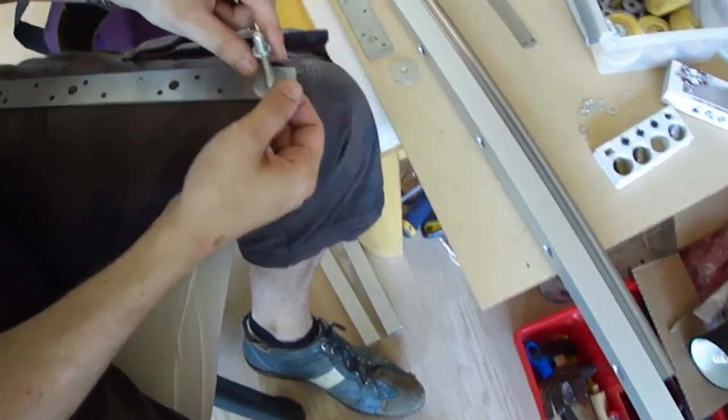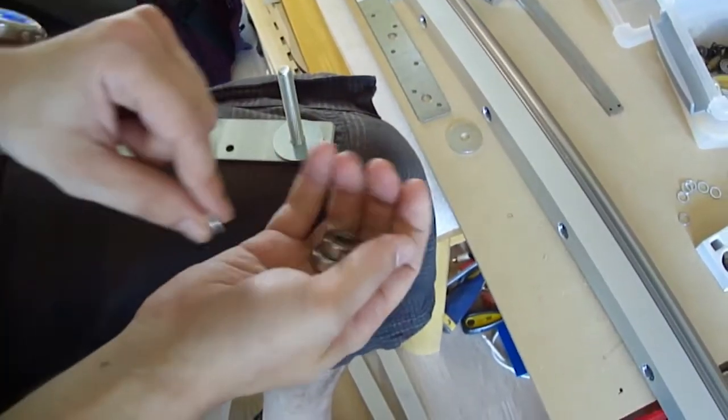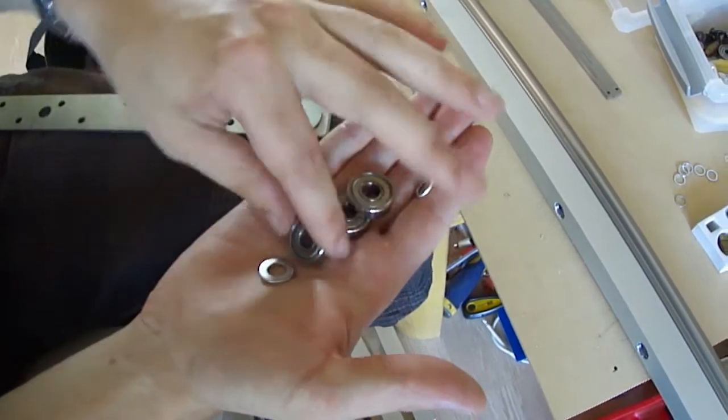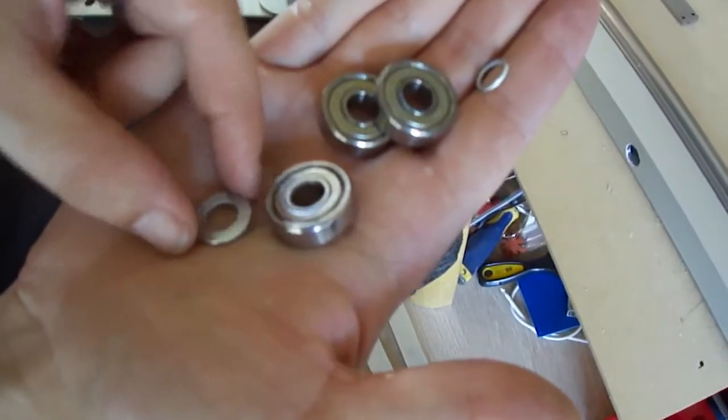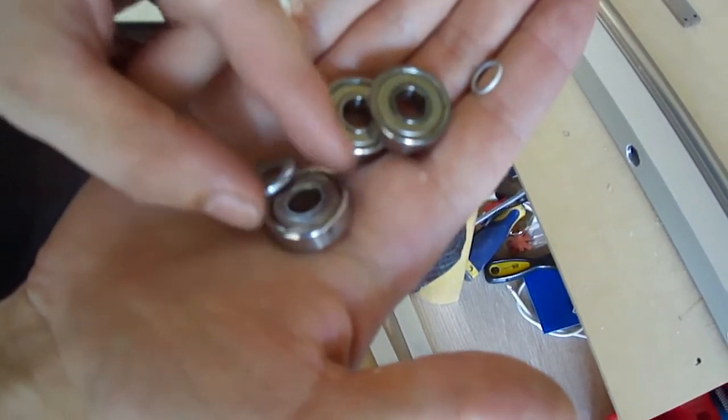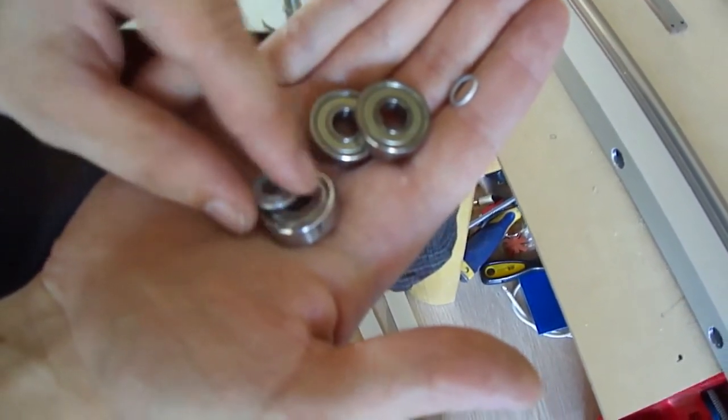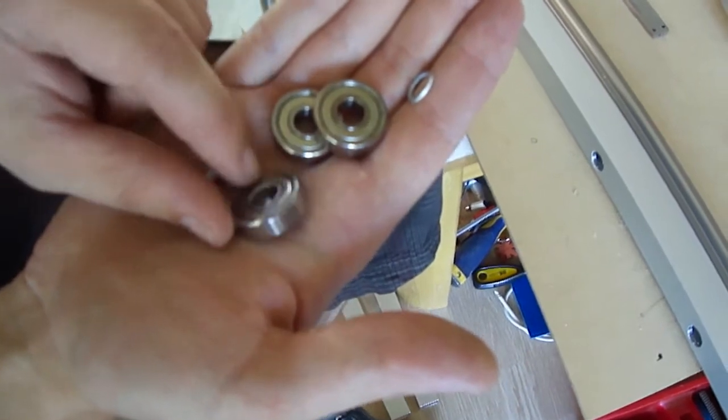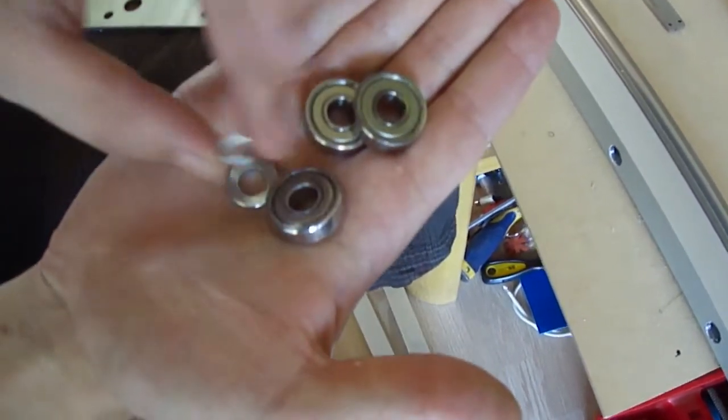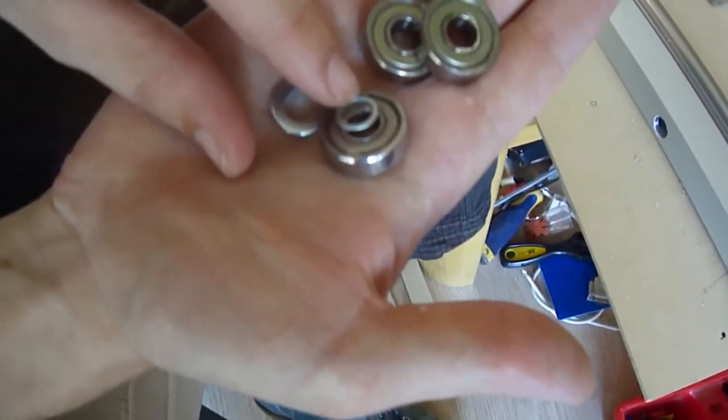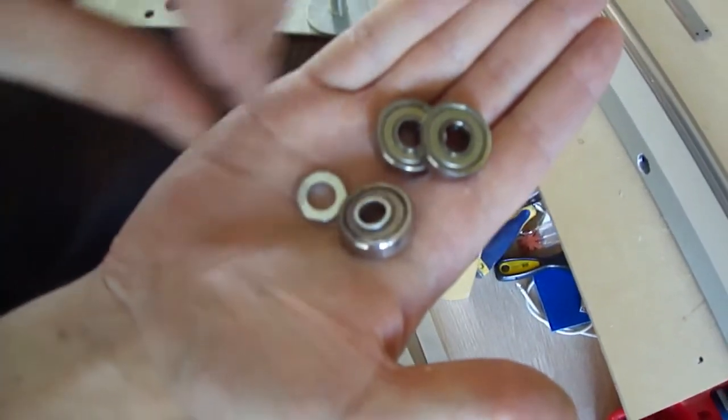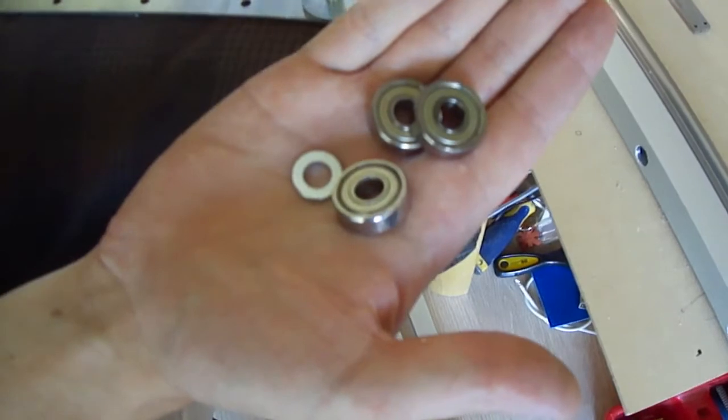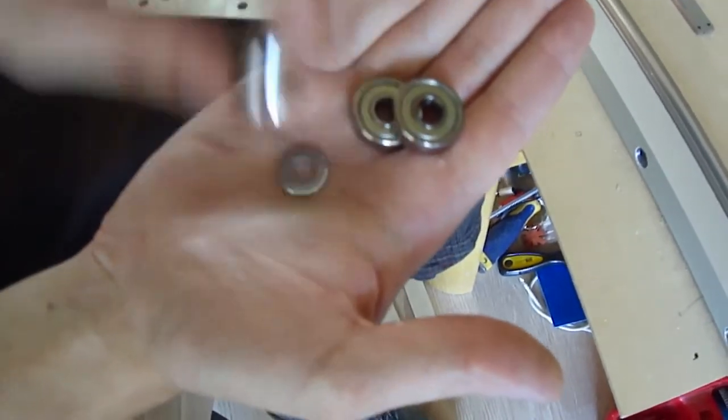This washer is probably slightly too big, because this washer will not only rub against the center of the bearing, but also against the seal. And the seal will spin with the outside. Not these bearings or these washers that are supposed to go with the bearings. That should work perfectly. Nice.